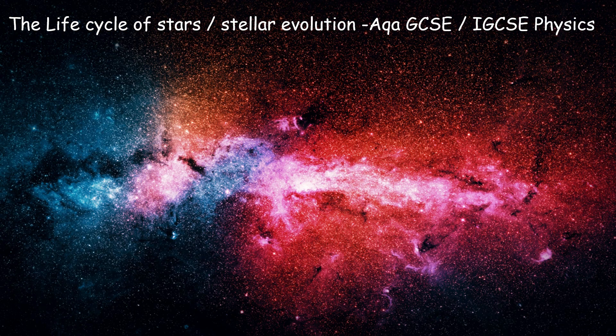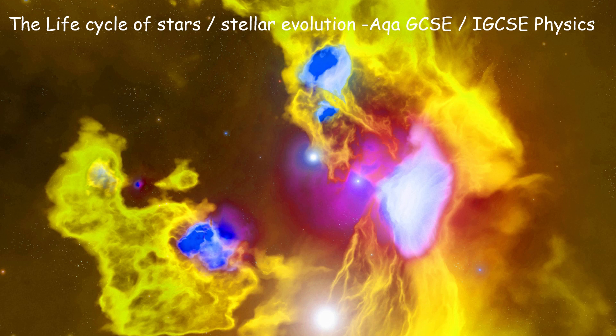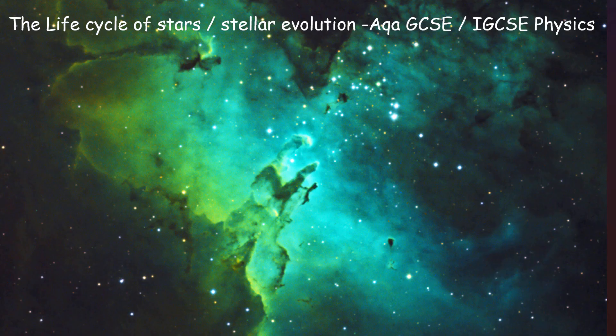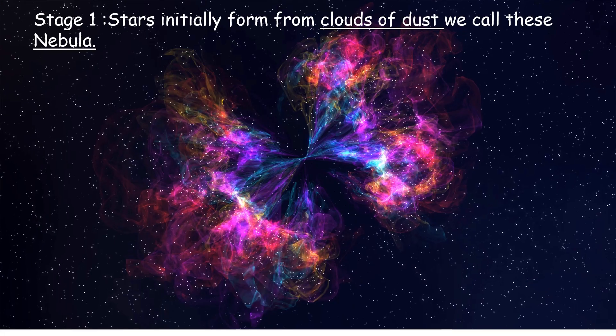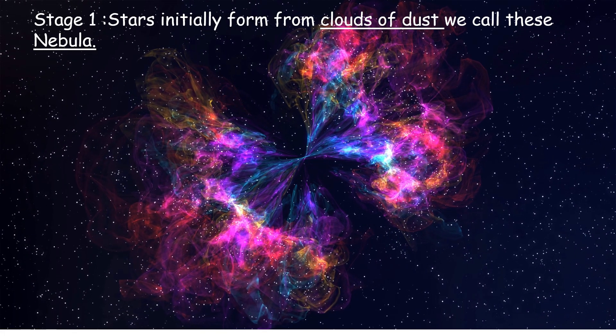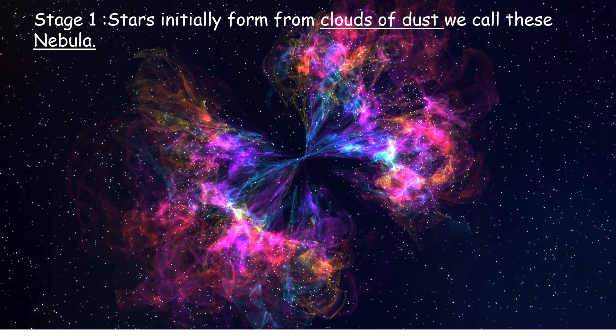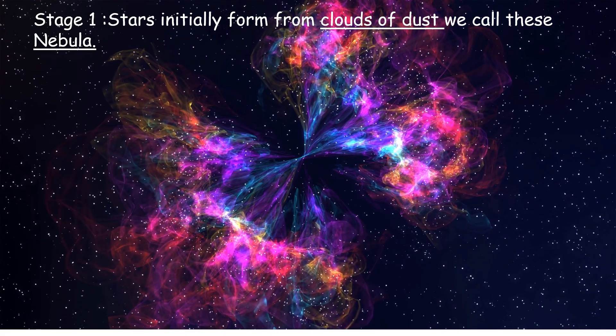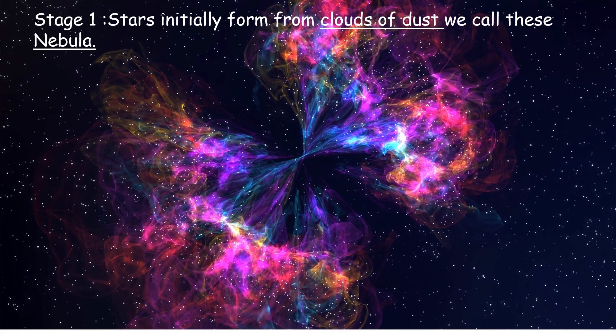Here before you, you see dust and gas in the far reaches of the universe coalescing together to form stars. In this presentation, we're going to go through all the stages in a star's life. Stage 1: stars initially form from clouds of dust. We call these nebula.